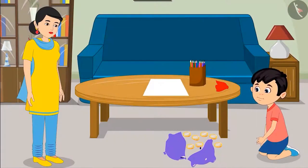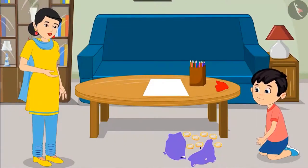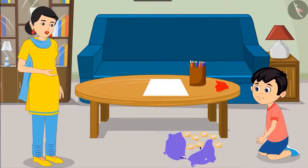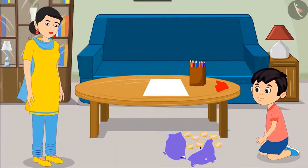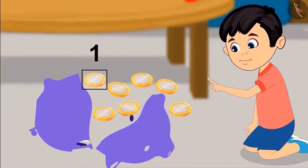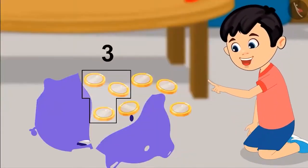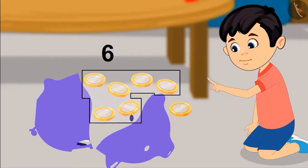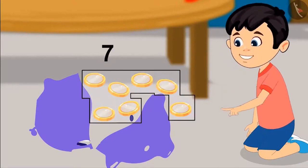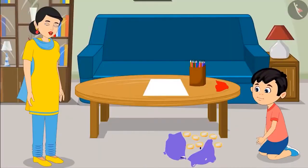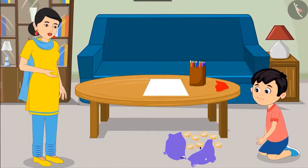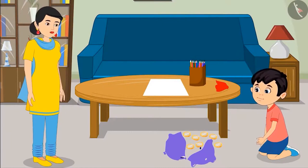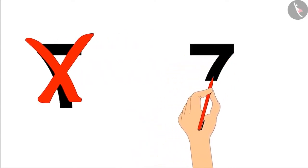The mother tells Chotu to count again one by one. This time Chotu carefully counts: one, two, three, four, five, six and seven. This means there are seven coins. The mother confirms: yes, you are absolutely correct. Now write the number of coins on paper so you remember.